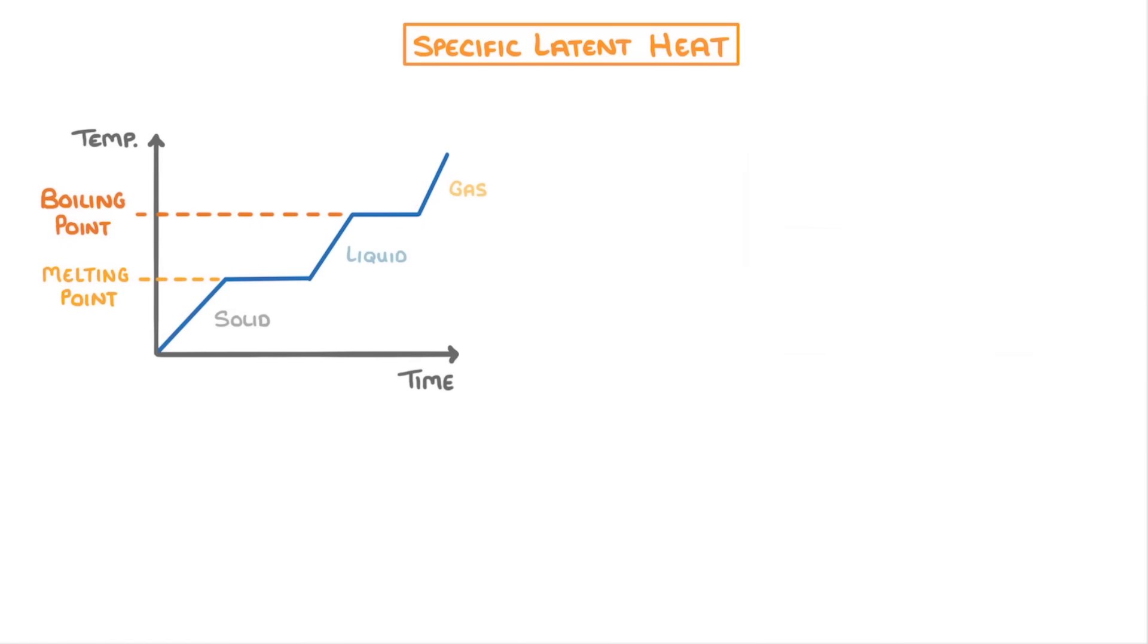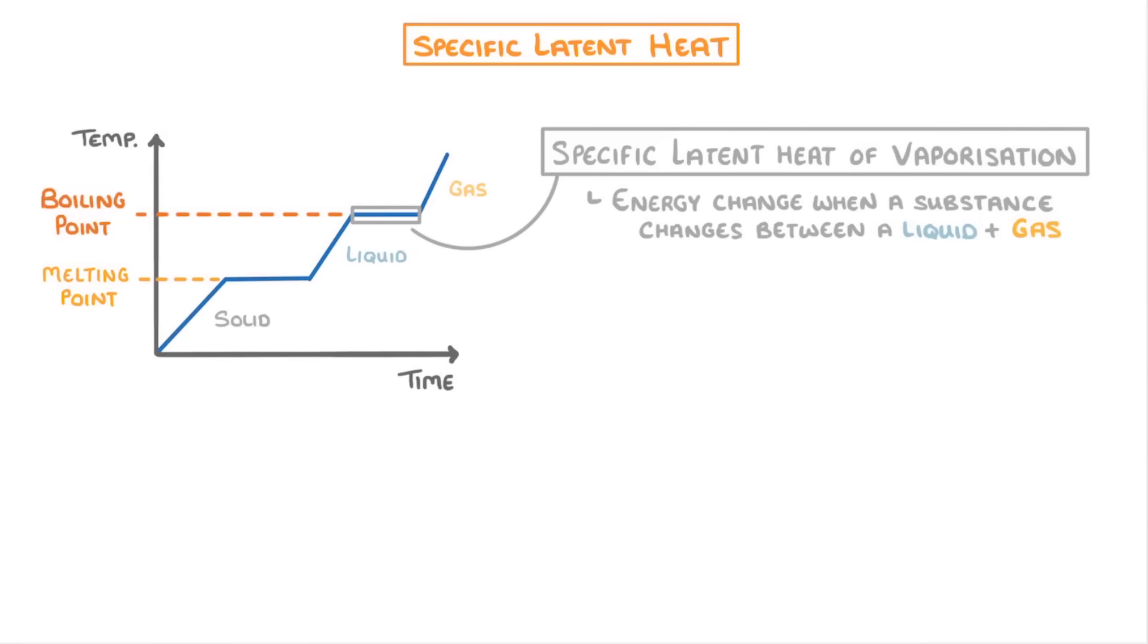Now, there are actually two types of specific latent heat. One is the specific latent heat of vaporisation, which is the energy change when a substance changes between a liquid and a gas. So either evaporates, or condenses.